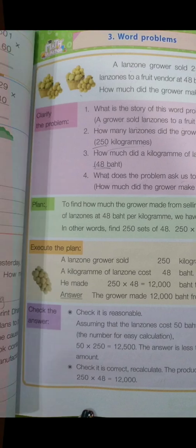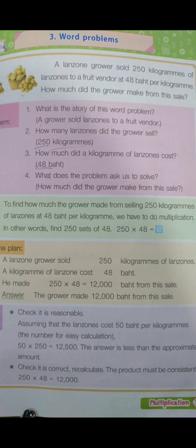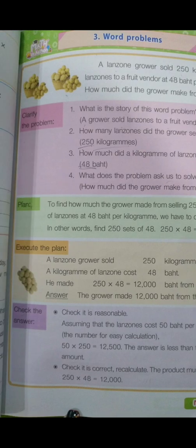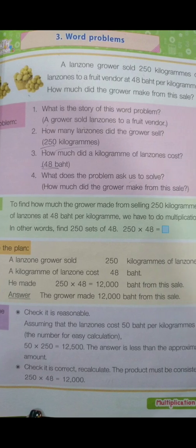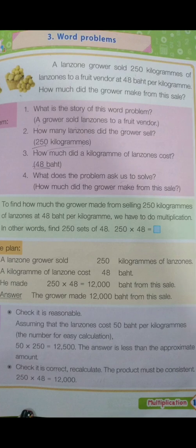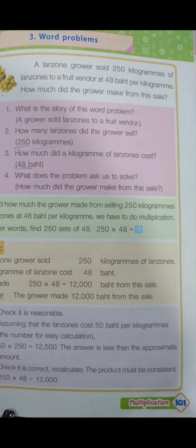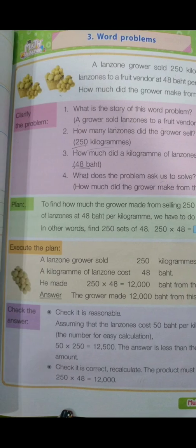Here is how to execute the plan: a lanzones grower sold 250 kilograms of lanzones; a kilogram of lanzones costs 48 baht. He made 250 times 48, which equals 12,000 baht from this sale. Answer: the grower made 12,000 baht from this sale.